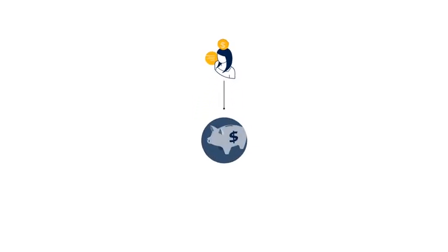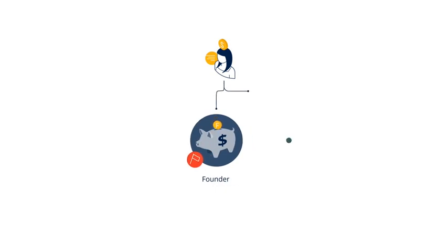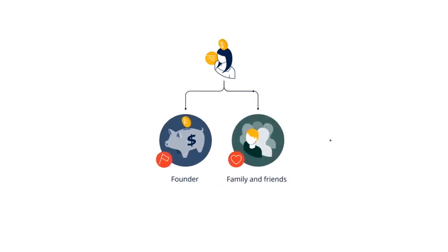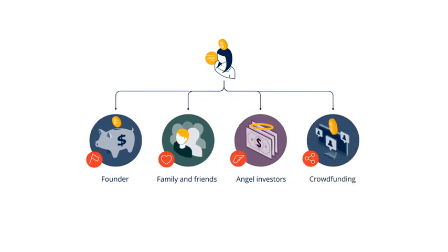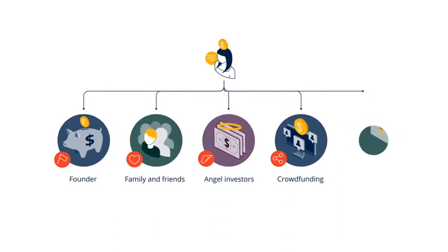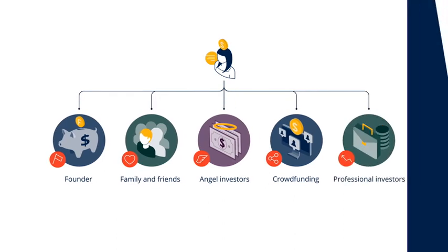The tools we're going to give you in this module is understanding why investors are different one from another and how that matters for the entrepreneur. In order to understand the landscape of investors we're going to put them into broadly speaking five buckets. The first one is actually not really a bucket because it's the founders themselves. The second one we call family and friends. The third one are angel investors. The fourth one is crowdfunding. And finally there's a large set of professional investors that we're going to look at in the fifth bucket.